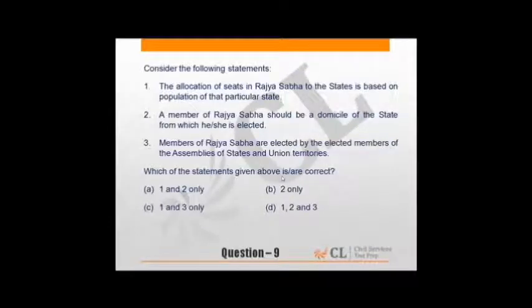The allocation of seats in Rajya Sabha to states is based on population of that state - of course we know it's correct. A member of Rajya Sabha should be a domicile of the state from which elected - currently there is doubt about this. Many people think law has been enacted, but right now it's not necessarily true. The members are elected by elected members of assemblies of states and union territories - of course, these members elect them. So 1 and 3 stand correct, not a difficult question.